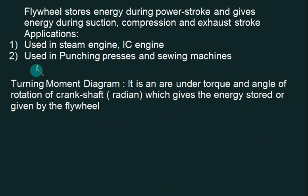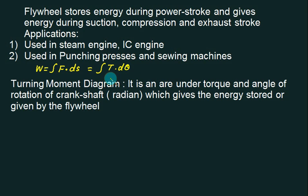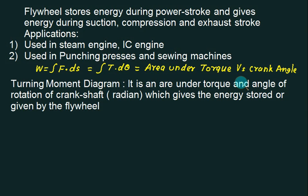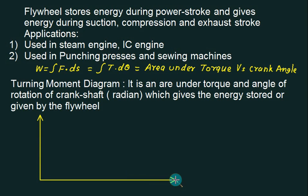Work done is defined as the integral of force multiplied by displacement. For the translational case it is ∫F·ds, and for the rotational case we have ∫T·dθ — that is the area under the torque versus crank angle diagram. The crank angle is always in radians. On the y-axis we plot torque T, and on the x-axis we plot θ. This diagram is normally called the turning moment diagram.